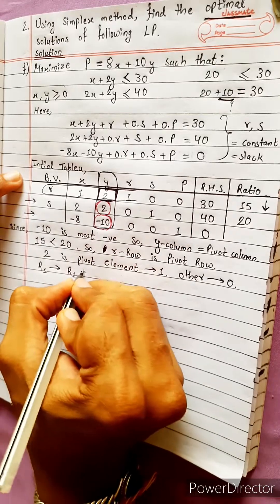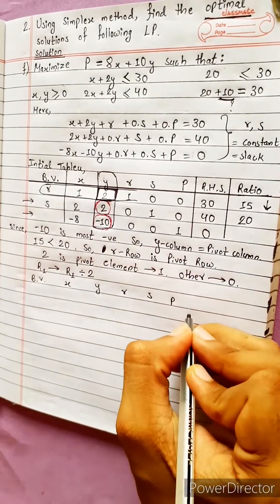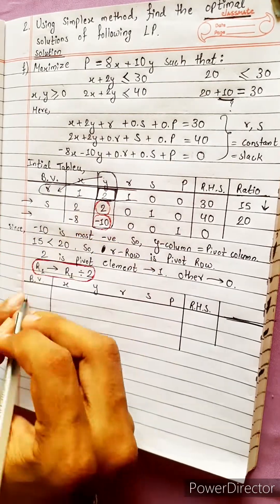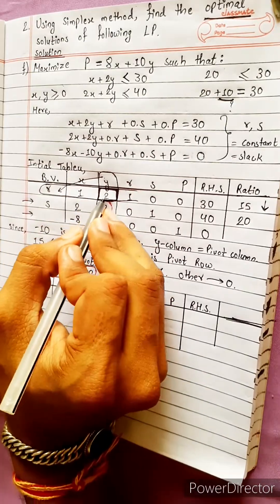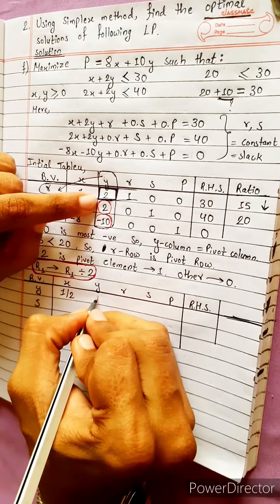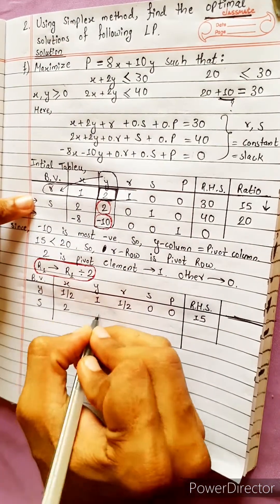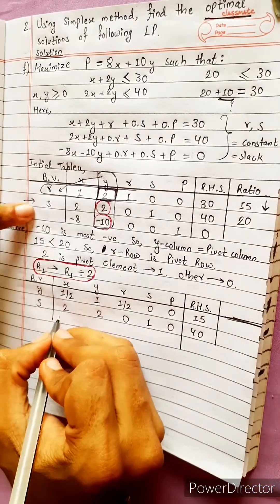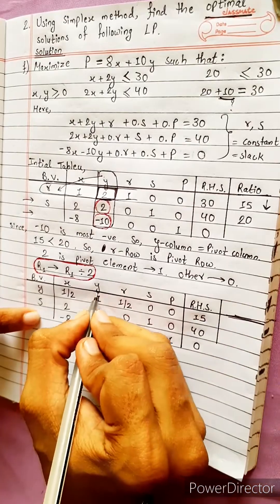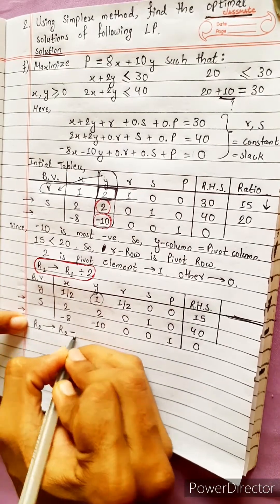For R1, the operation is: change R1 into R1 divided by 2. New table with basic variables x, y, r, s, p. R1 becomes: 1/2, 1, 1/2, 0, 0, 15. The other rows remain: 2, 0, 1, 0, 40 and minus 8, minus 10, 0, 0, 1, 0.